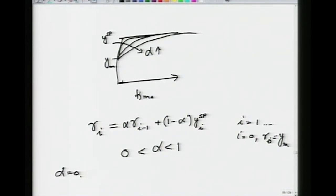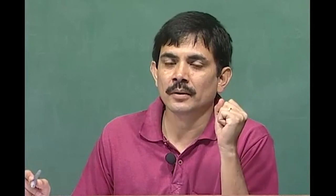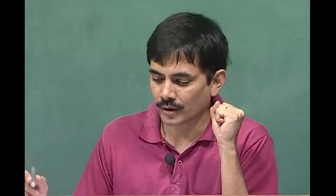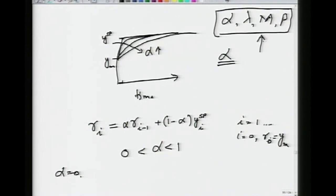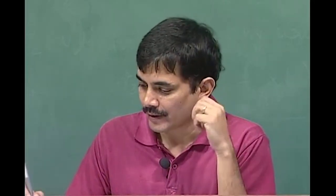As alpha increases from 0 to 1, you get more and more damping — a slower and slower rise to the set point. Alpha is a parameter in the hands of the control system designer. Small alpha means a fast rise, making the control system aggressive; larger alpha makes the control system more sluggish. So alpha, lambda, M, and P are the tuning parameters available to the control system designer to tune the model predictive controller to get the desired control performance.